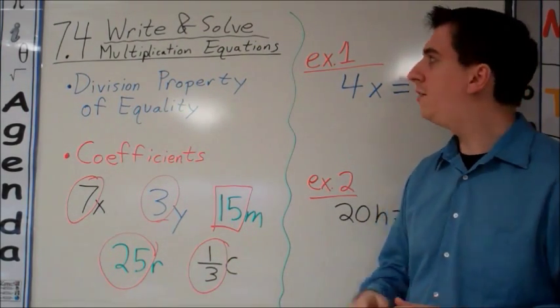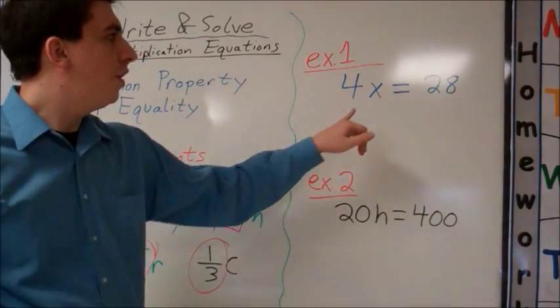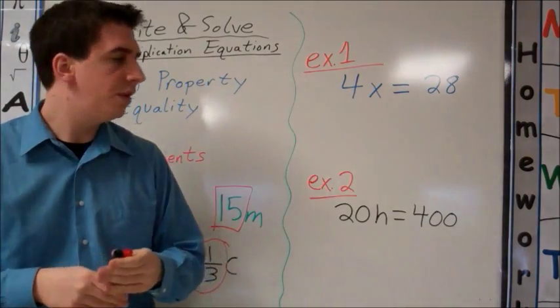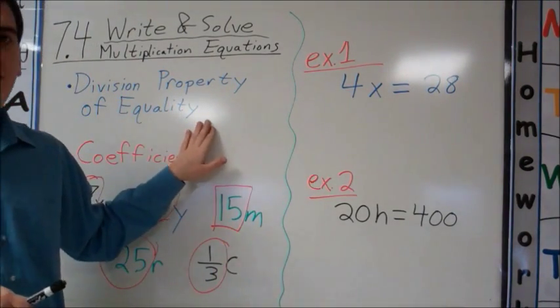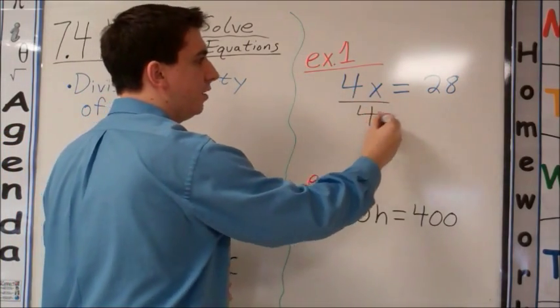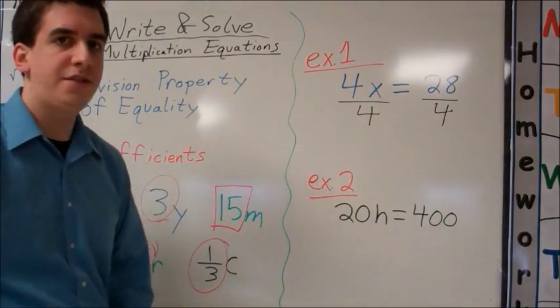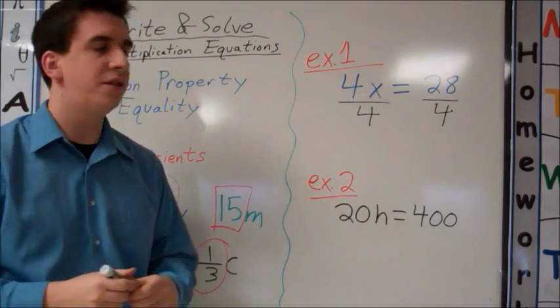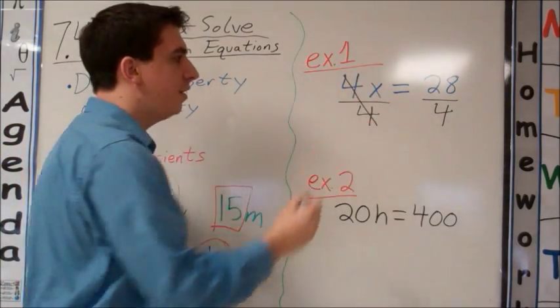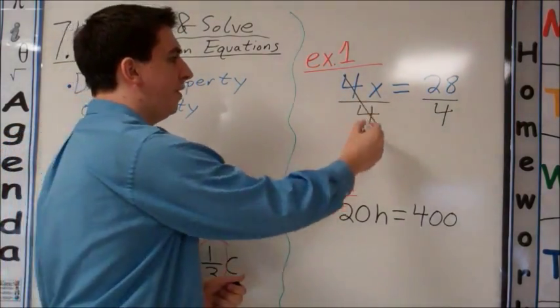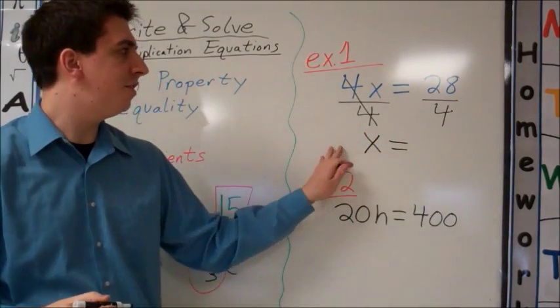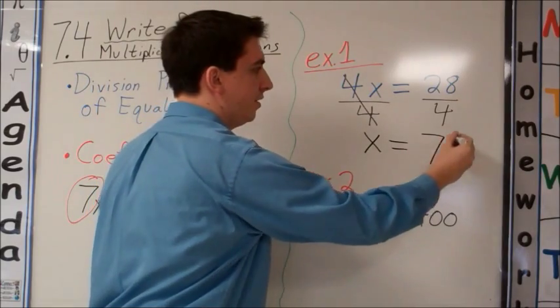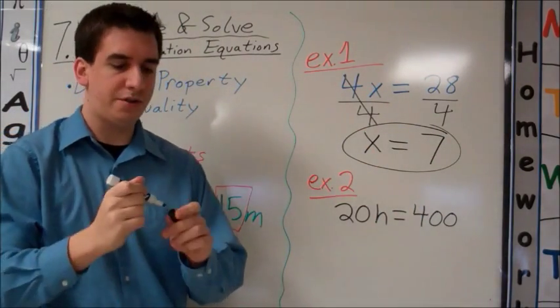We'll do some examples together of multiplication equations here. Here we have a multiplication algebraic equation, 4x equals 28. We need to find out what x is. If I'm using the division property of equality, I'm going to divide by 4 from both sides. Notice how instead of writing divide by 4 with a division sign, we wrote a fraction. This helps us because we can see that 4 divided by 4 divides out by our variable, so we only have the variable left on the left side of the equation. On the right side, 28 divided by 4. 28 divided by 4 is 7, and always remember to circle your final answer there.